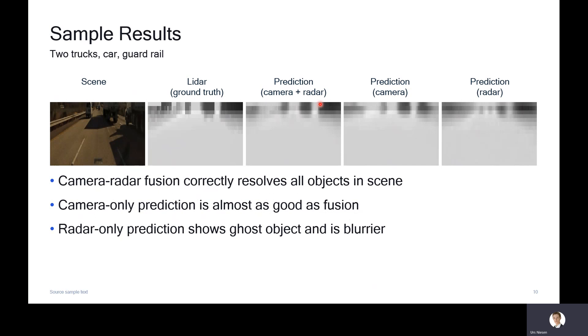In this scene, camera radar fusion correctly resolves all objects. You can see this by comparing the depth maps. The camera only prediction is almost as good as the fusion. The radar only prediction shows a ghost object that is not present in the actual scene and is blurrier. The conjecture is that the blurriness comes due to the reduced azimuth resolution of the radar input.